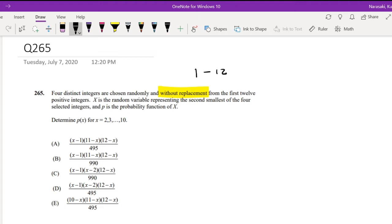So let me define X again. X is defined as the random variable representing the second smallest of the four integers.